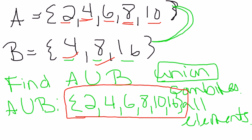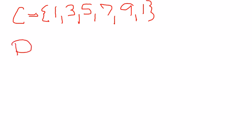So now let's look at another union example. And then we'll move on to some intersections. So let's see if I have C is 1, 3, 5, 7, 9, and 1 again. And then D is 1, 2, 3, 4, 5, and then 6.